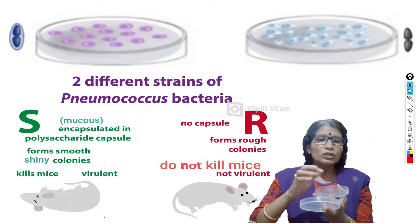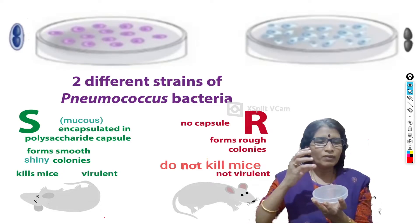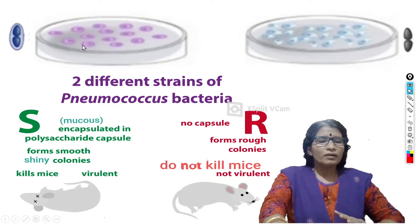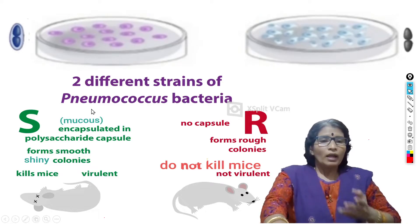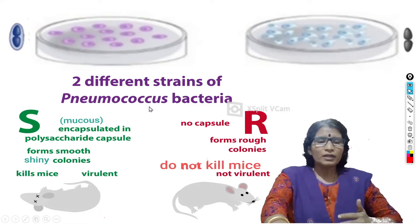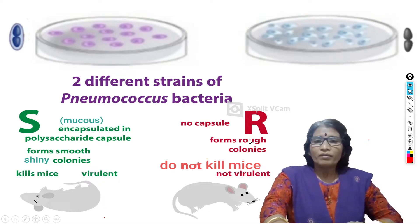Smooth bacteria form smooth and shiny colonies due to the presence of the mucous membrane, while rough bacteria form rough colonies due to the absence of mucous membrane. Streptococcus pneumoniae bacteria cause a disease called pneumonia, which is a type of lung infection. Smooth varieties are virulent, meaning poisonous and toxic, whereas rough varieties are not virulent — not poisonous, not toxic.